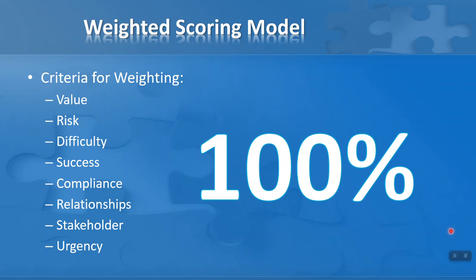Let's take a look at some criteria you could use in the weighted scoring model. There will be plenty of these and they differ from project to project, but here are eight generic ones that are very useful when starting out: value, risk, difficulty, success, compliance, relationships, stakeholder, and urgency. These criteria can have different weightings. For example, the risk of one solution might be higher than another solution, so we need to weight that in. Whatever you do, make sure your weightings add up to 100%. It's a common mistake that this is not done.